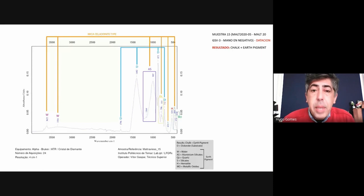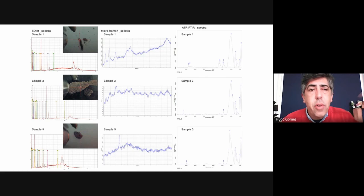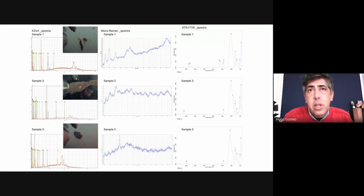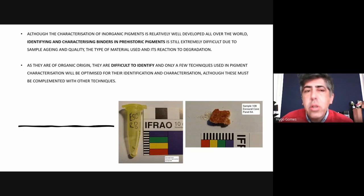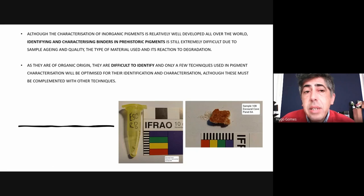Here is an example from Maltravieso — the hand stencil. We found a celadonite type mineral, a kind of mica, and other elements related to the hand stencil. When we join all the information from Raman, EDXRF, FTIR, and gas chromatography, we have the general composition of the pigment, alteration products, and substrate information. Although the characterization of inorganic pigments is clearly well developed around the world — especially in the last decade — the characterization of binders in prehistoric pigments remains extremely difficult.